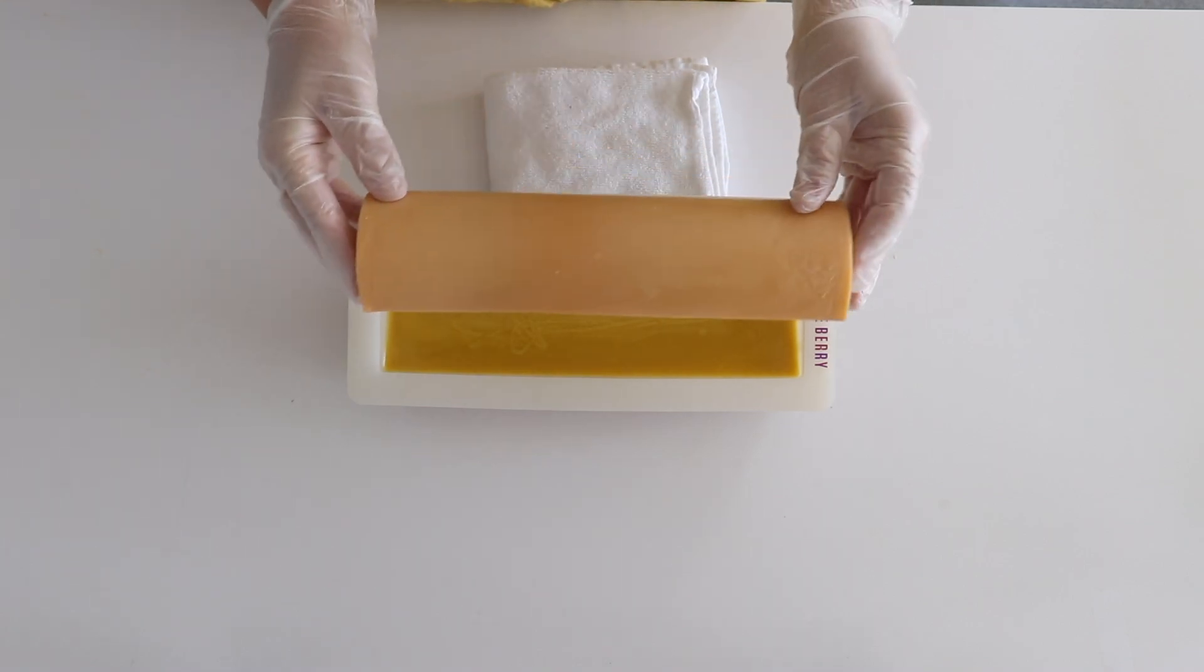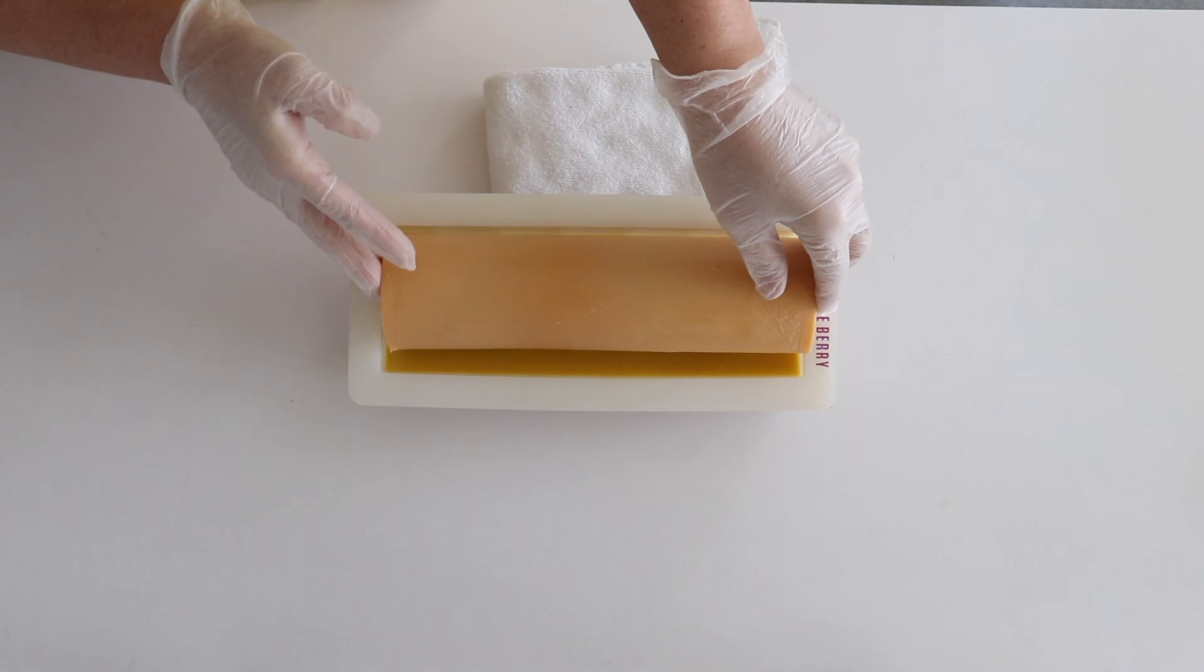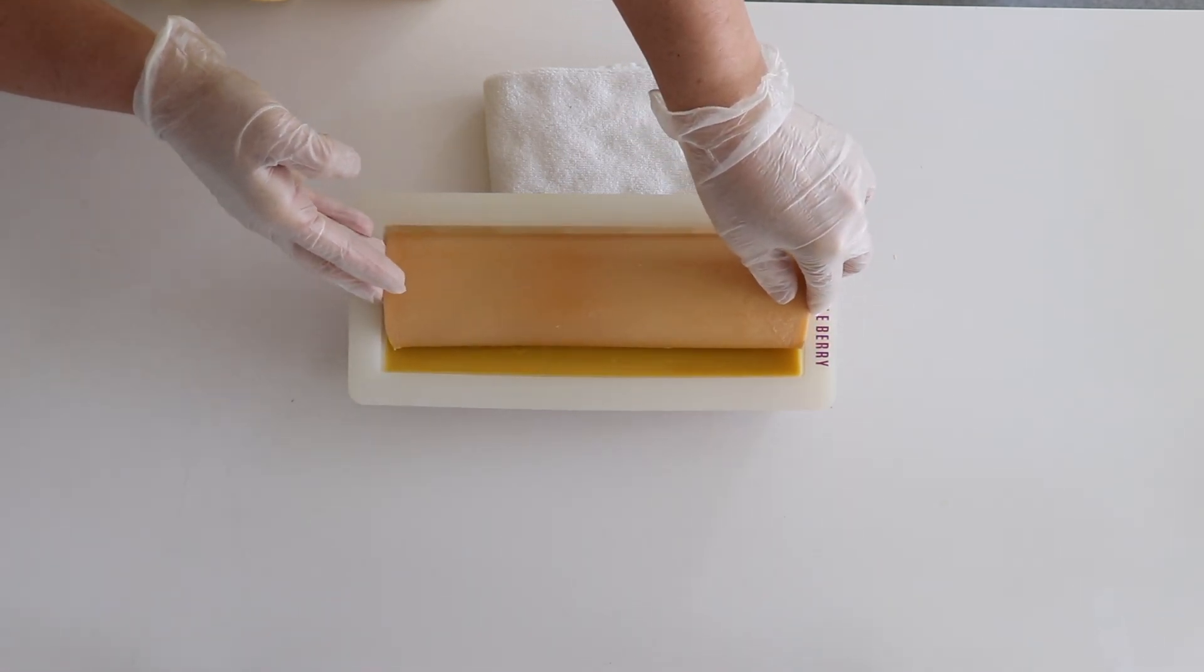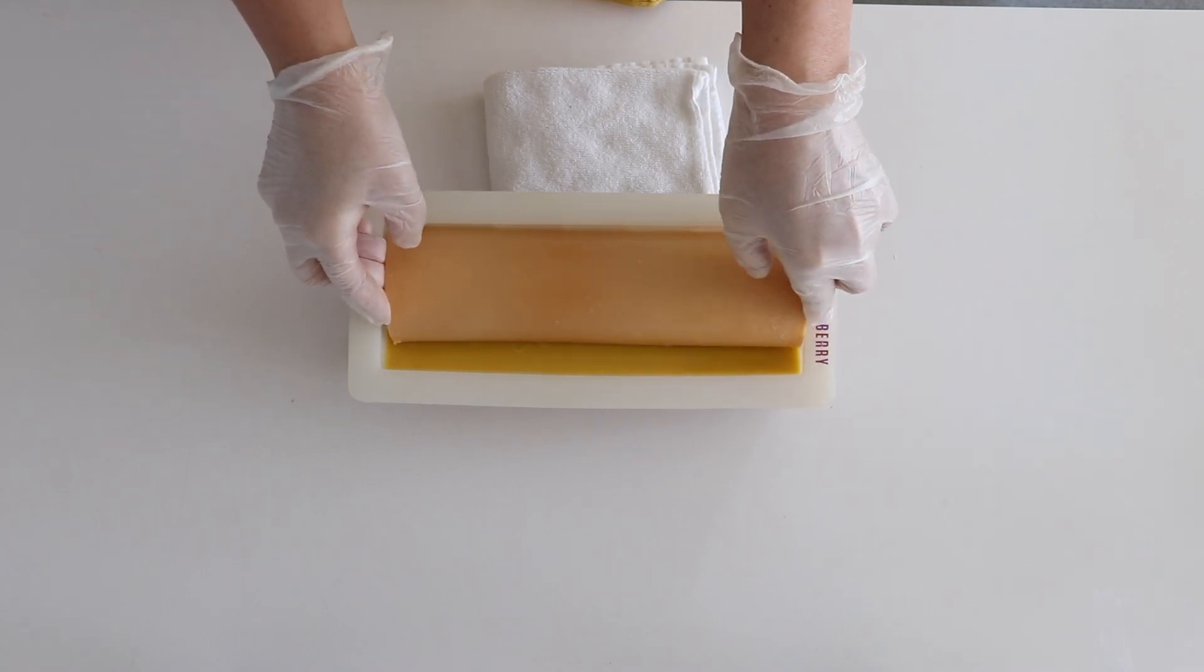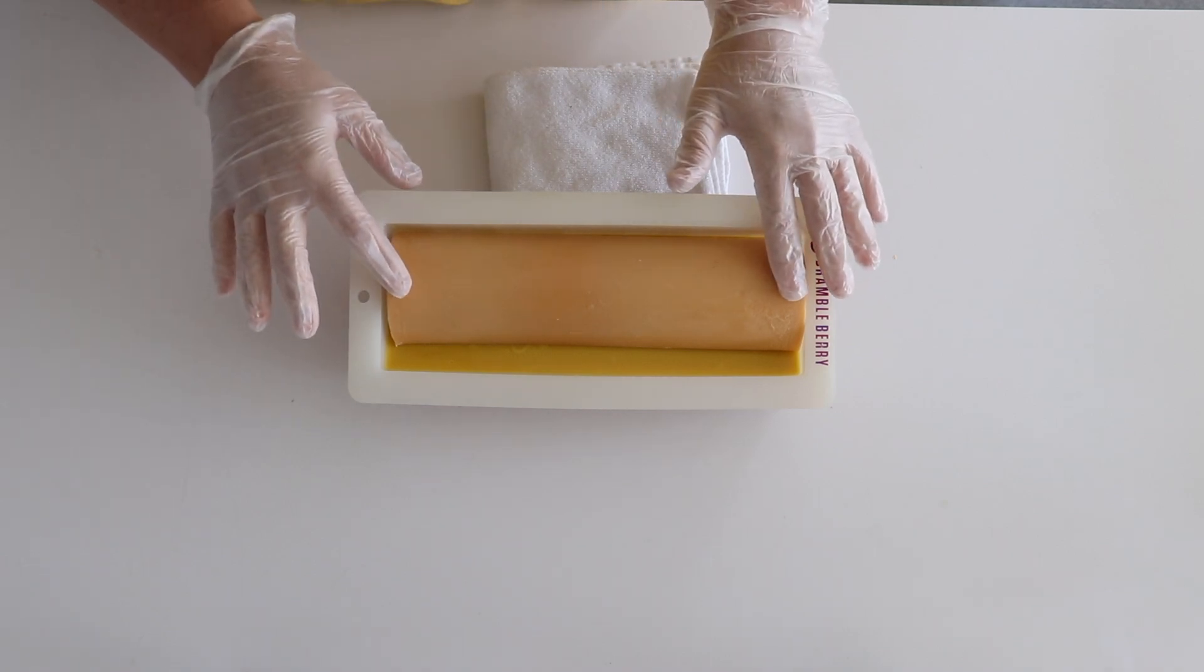I'll grab that half sun that I set aside earlier and very, very carefully lower the sun with the flat side down onto the top of the soap. And then I pat it gently just to remove any gaps that might be trapped underneath, but don't push it in too far.